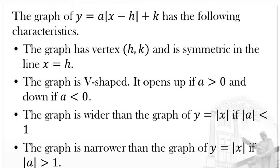The graph is a V-shape, as it is an absolute value function. It opens upward if a is greater than 0, and downward if a is less than 0. The graph is wider than the graph of y equals the absolute value of x if the absolute value of a is less than 1, and narrower if the absolute value of a is greater than 1.